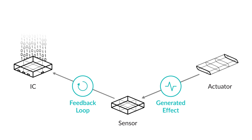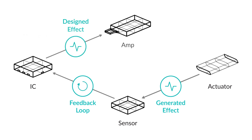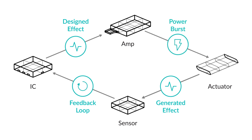The algorithm counterbalances the projected actuator's state to match the curve of the effect design. It sends this instruction to the amplifier, which creates the perfect next signal for the actuator. This makes it possible to stop the actuator, or strengthen or elongate the vibration in milliseconds to create the haptic effect as designed.